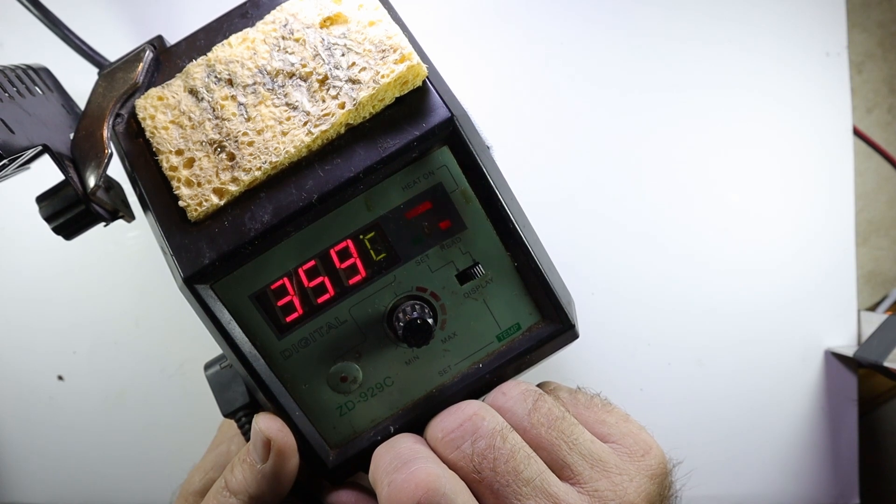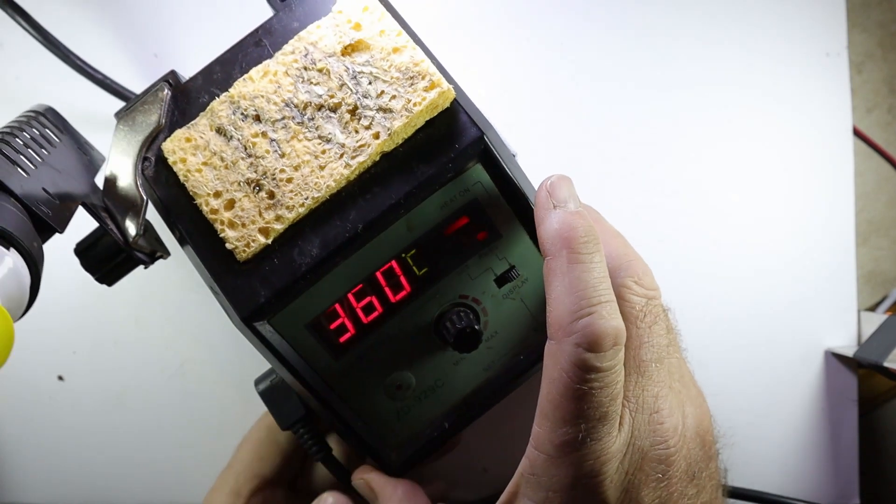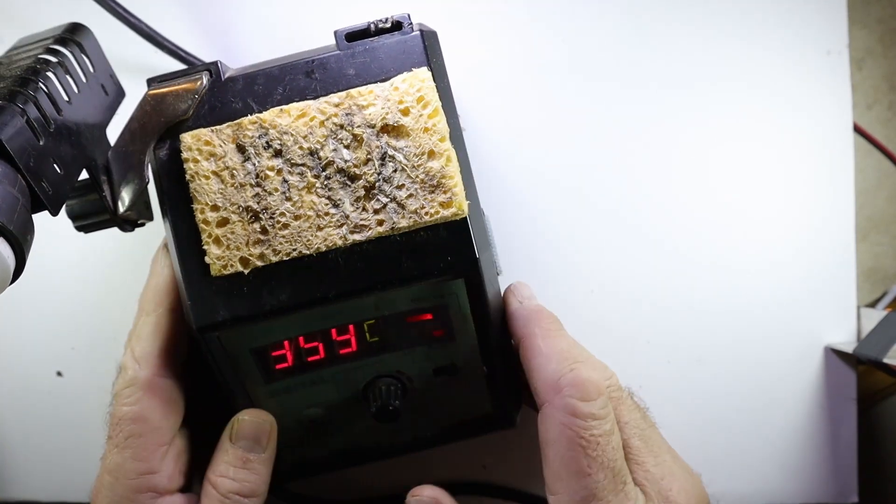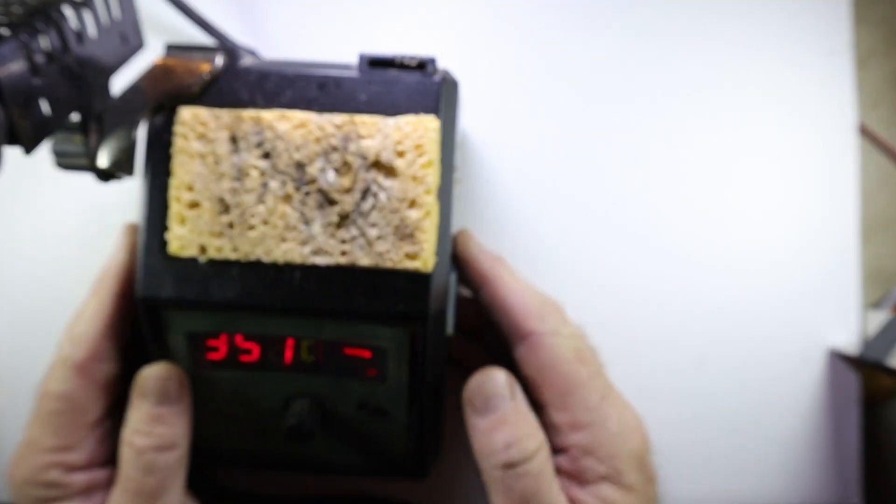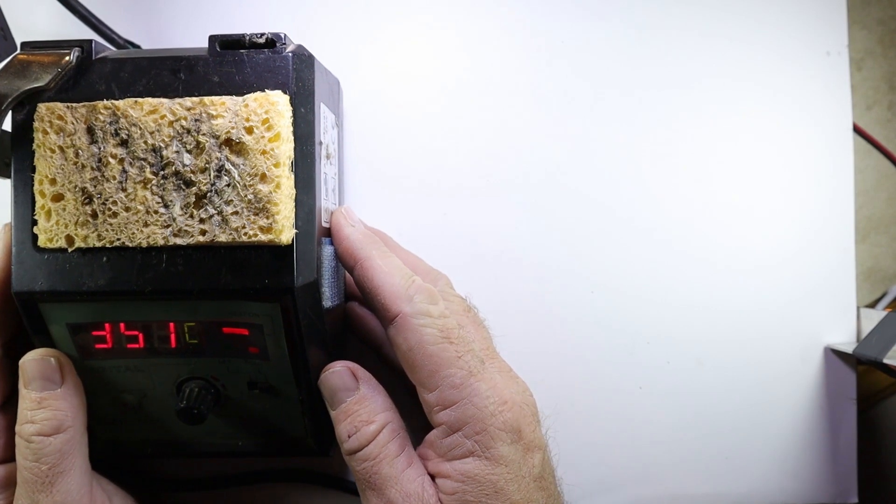For general soldering purposes, I would suggest you set it to between 350 and 360 degrees Celsius. That will in most cases give you very good results.